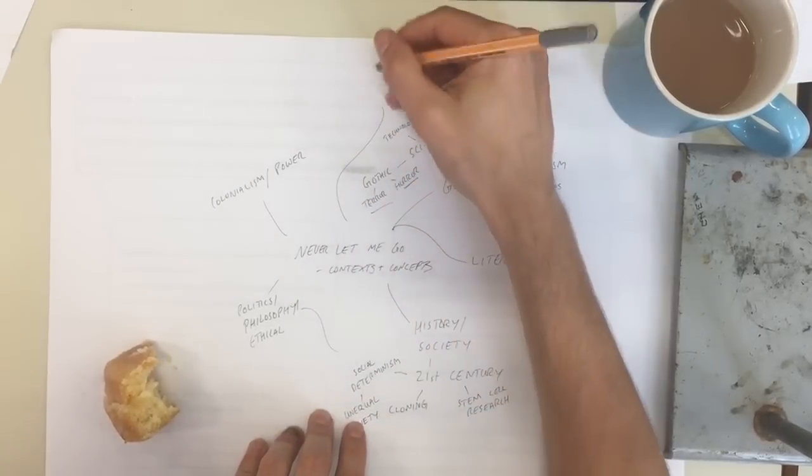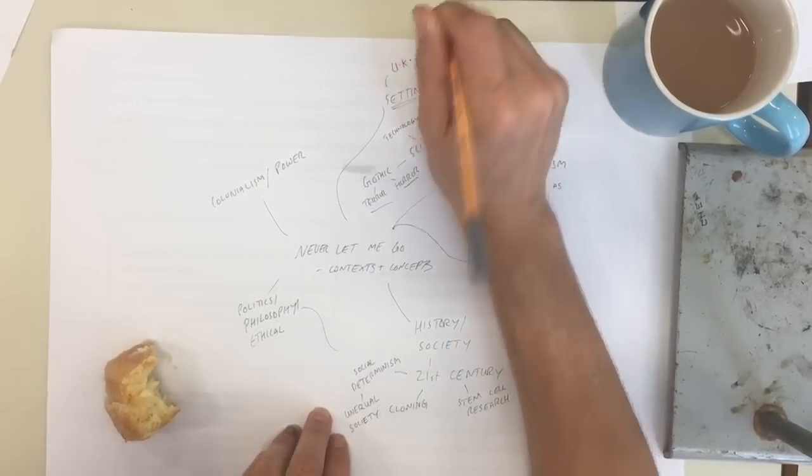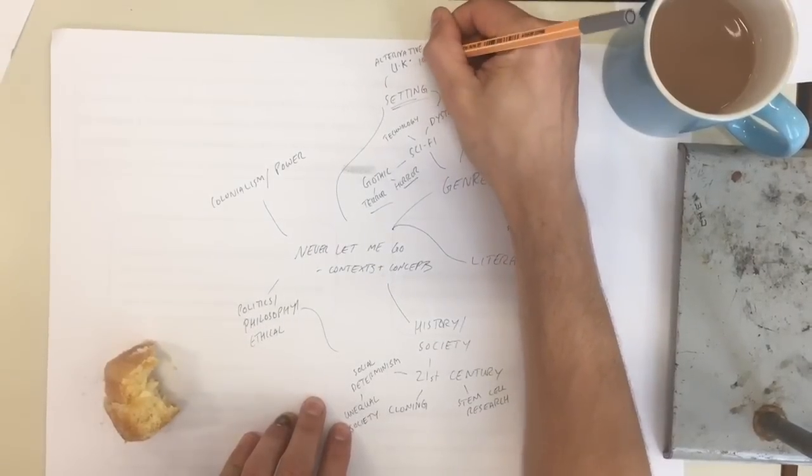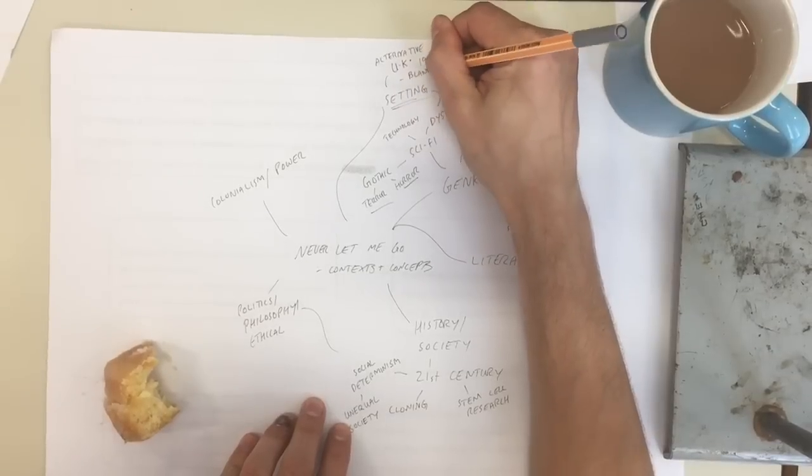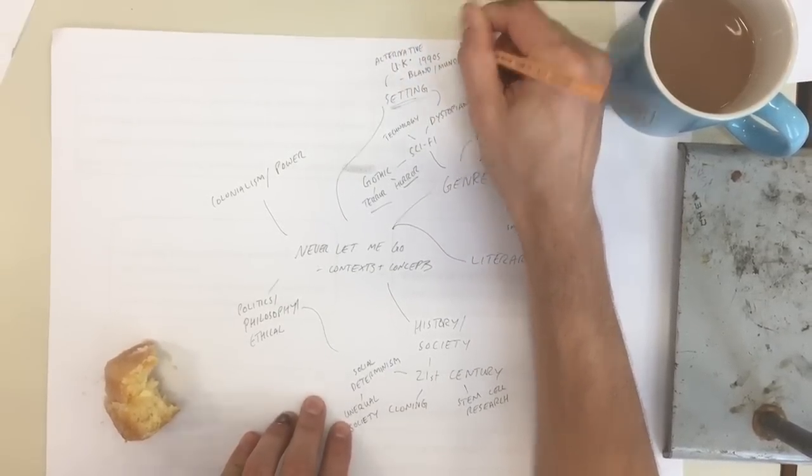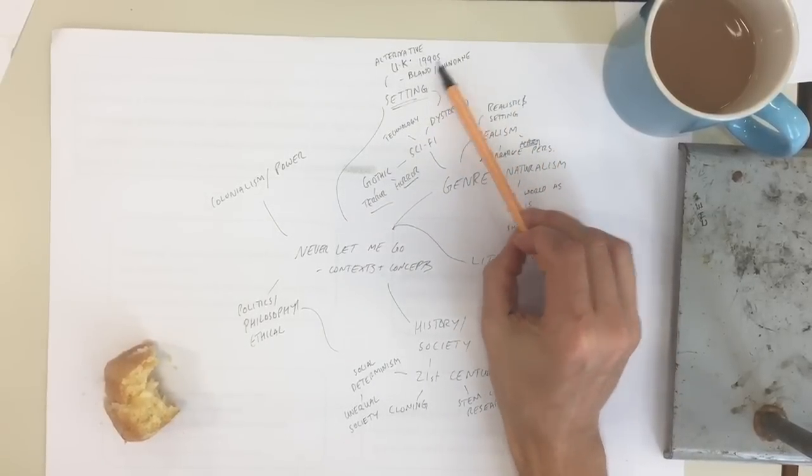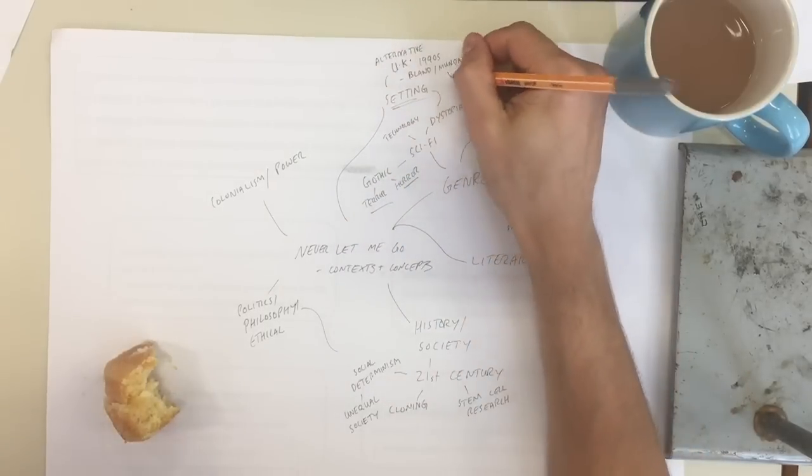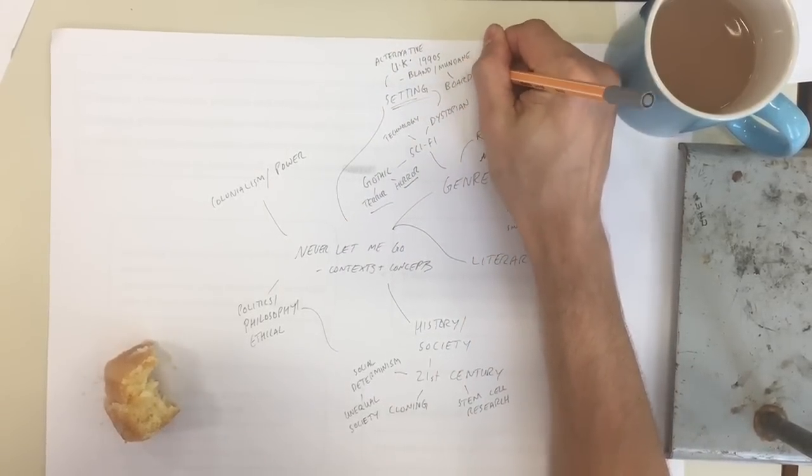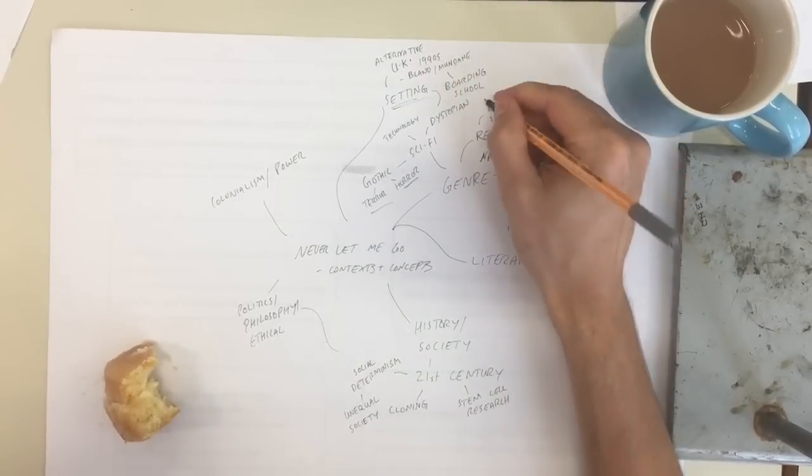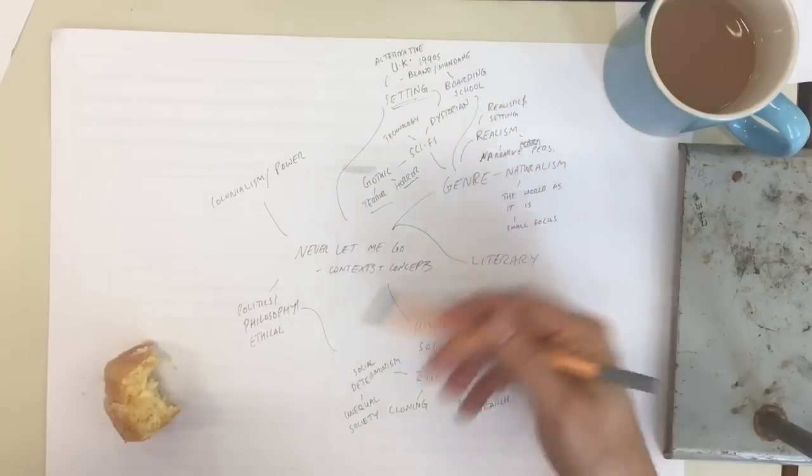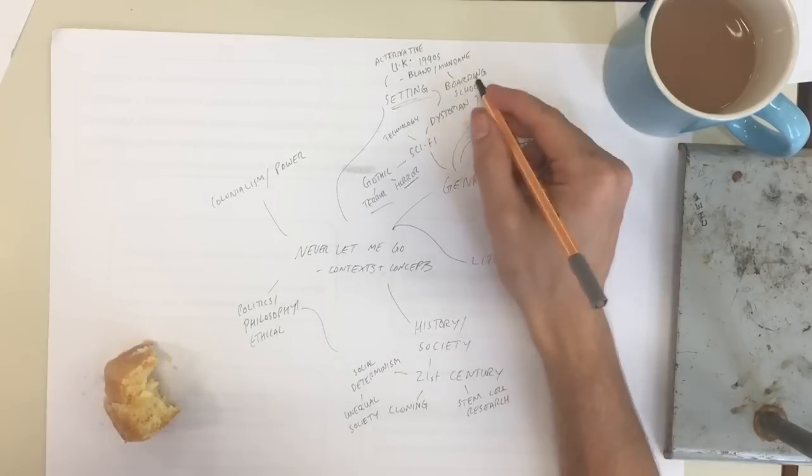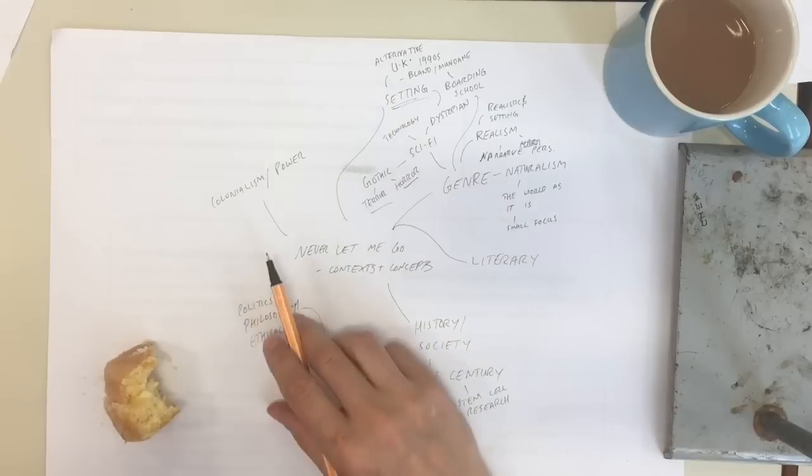That moves us onto the setting, this dystopian setting. The idea that the UK in the 1990s was dystopian. Well, I lived through it. So it's an alternative UK, isn't it? It's an alternative UK setting. So in the 1990s, and it's very, very bland and mundane. The only real difference between the 1990s of this sci-fi dystopian imagined alternative parallel world and ours is the one technology of cloning. Everything else seems very, very mundane. So elements of the boarding school, or just school in general, those elements are genre features, almost like the campus novel or the school novel, the young adult novel, where we see this quite bland, mundane, institutional setting that's going on here. And why that's significant adding to this slow burn of the horror of the text.